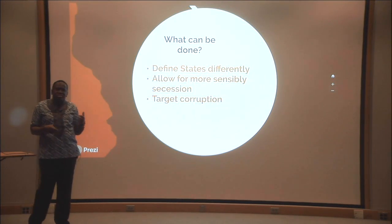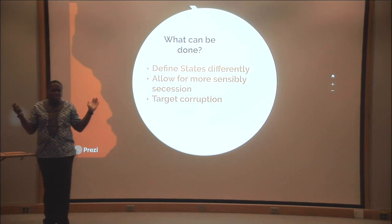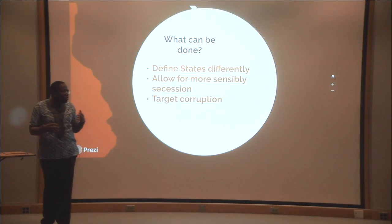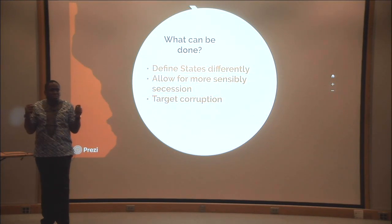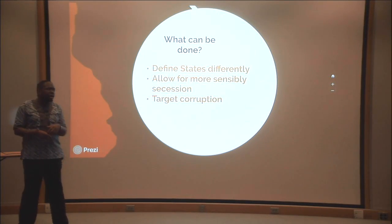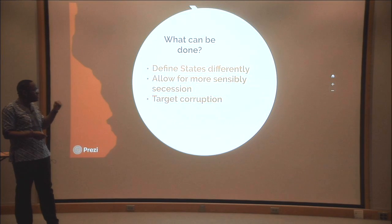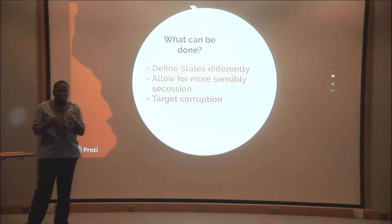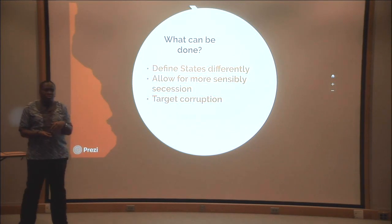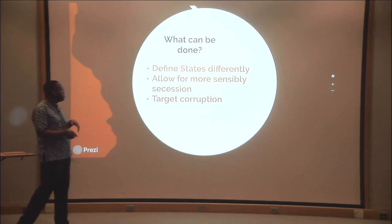Another solution is to target corruption. Corruption exists everywhere, even in the U.S., but it's the level and extent of corruption that affects a state's ability to function. When corruption leads people to allocate funds in the wrong way to such a large extent that people don't get basic amenities, it becomes a serious problem. Many people say we need to limit terms for political leaders and implement more effective control measures.